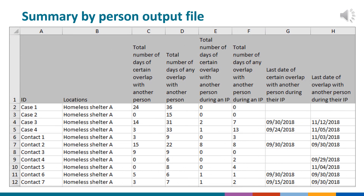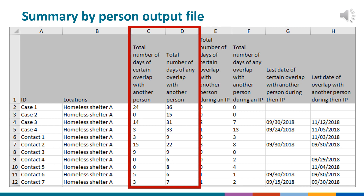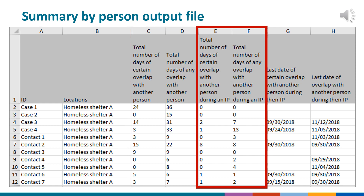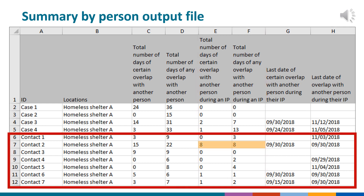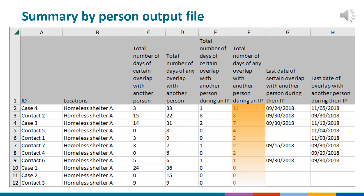Another output of a LATTE analysis is the summary by person output file. For each person included in the analysis, this file reports the total number of days of overlap with other persons and the total number of days of overlap with patients during their infectious periods, if infectious period data were available. This information can inform cluster and contact investigations in multiple ways. Among the contacts, Contact 2 had a relatively high number of days of overlap with one or more patients during their infectious periods. Because of this exposure, Contact 2 could be prioritized for follow-up. In contrast, Contact 3 had no days of overlap with a patient during their infectious period. Because of this lack of exposure, Contact 3 is lower risk of having been infected at Homeless Shelter A and could represent a low priority for follow-up. By sorting the data based on values in column F, a list of persons ordered according to their priority for follow-up can easily be generated.